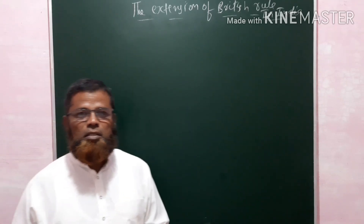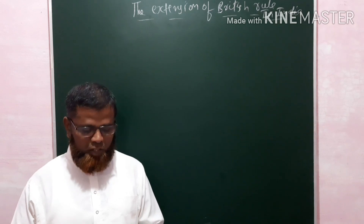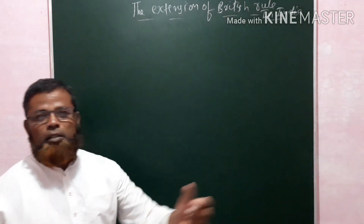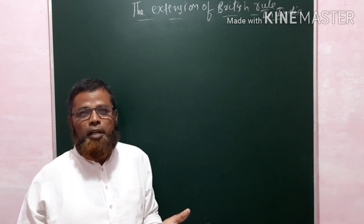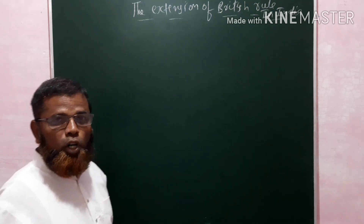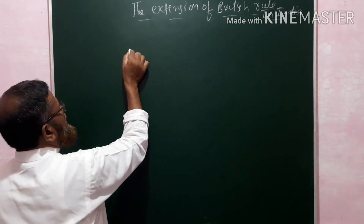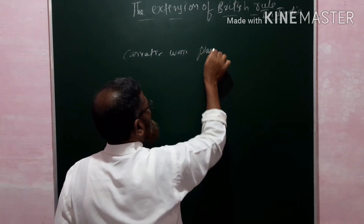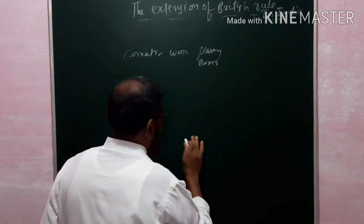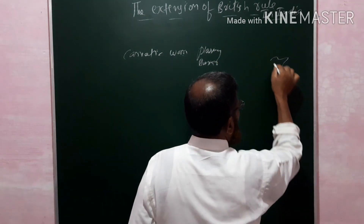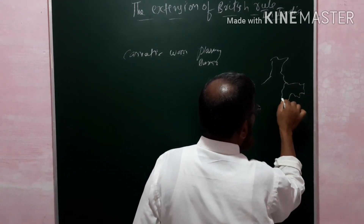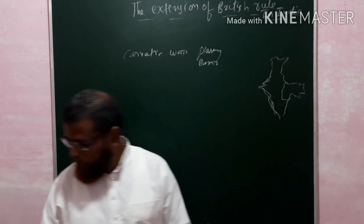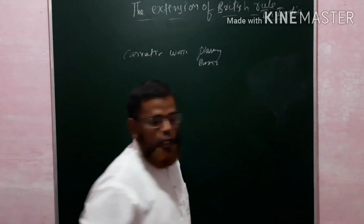In this series of videos about SSLC social science, today I am going to deal with a new chapter: the extension of British rule in India. The British began to extend their power in India after already gaining control over important parts of India following the Carnatic Wars, Battle of Plassey, and Battle of Buxar. After these three important events, they got control over the Bengal region.